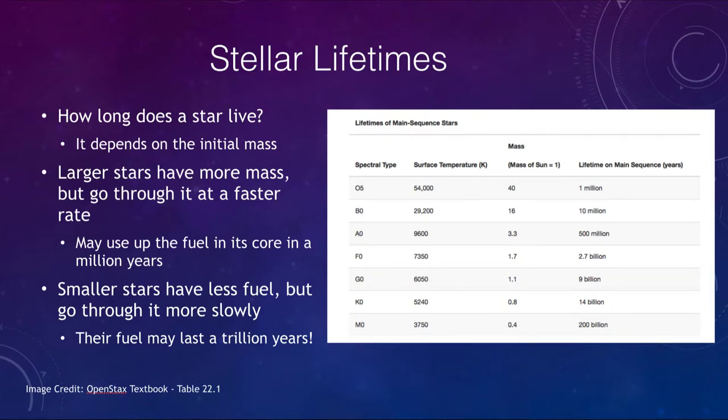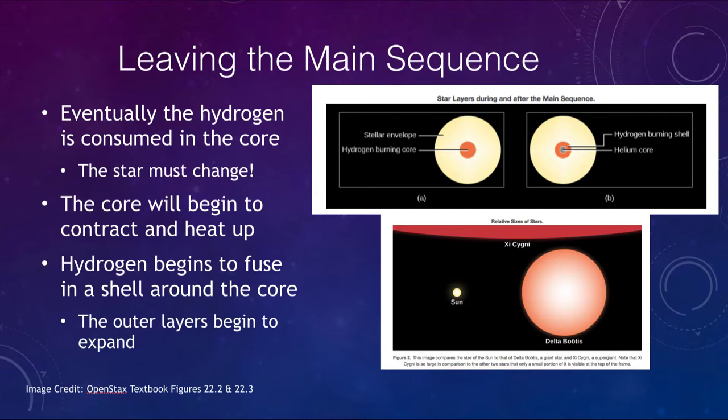Now let's take a look here at what happens as we begin to leave the main sequence. Because eventually, whether you have a big gas tank or a little gas tank, the hydrogen is going to be consumed, whether that be in a million, or in a billion, or in a trillion years. Once it runs out of fuel, the star must change. It does not have any choice, because it is going to begin to change its core.